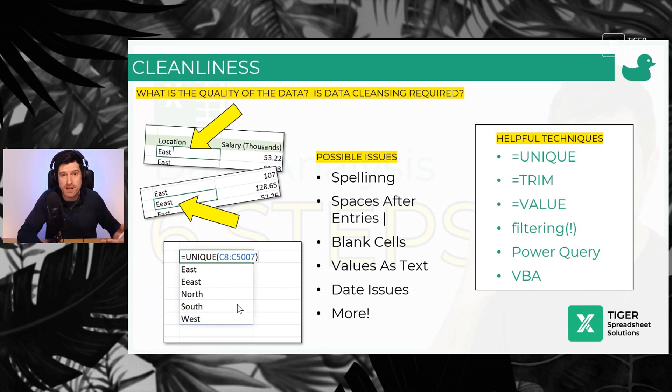Well, the UNIQUE formula is a great addition in Excel. If you haven't got access to it, you need to update your version of Excel. That tells us the number of unique values in a data set. It's going to highlight things like spelling mistakes. And then we've got the TRIM formula that's going to get rid of those spaces. The VALUE formula is going to convert text to values.